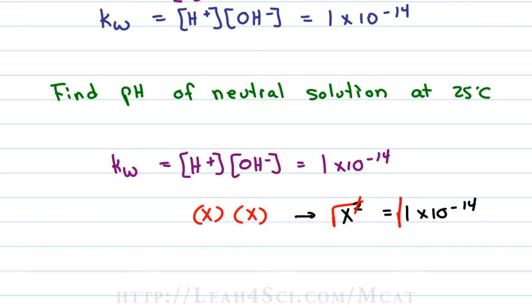And so I'm solving for X times X, or simply X^2 is equal to 1 × 10^-14. Take the square root of both sides to isolate X, and then simply find the square root of 1 × 10^-14. To find the square root of 10 to an even power, simply divide by 2, and X, which is equal to the H+ concentration, which is equal to the OH- concentration, is equal to 1 × 10^-7.